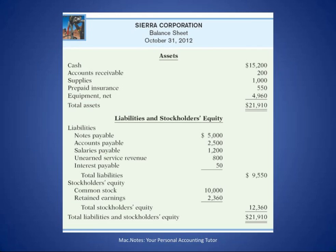These are formal financial statements. They start off with the name of the company and the type of statement. But this is just one date, October 31st, 2012. This is at the close of business — think of this as a snapshot at the end of October 31st, 2012. Here's a list of the assets, that is what the business owns.